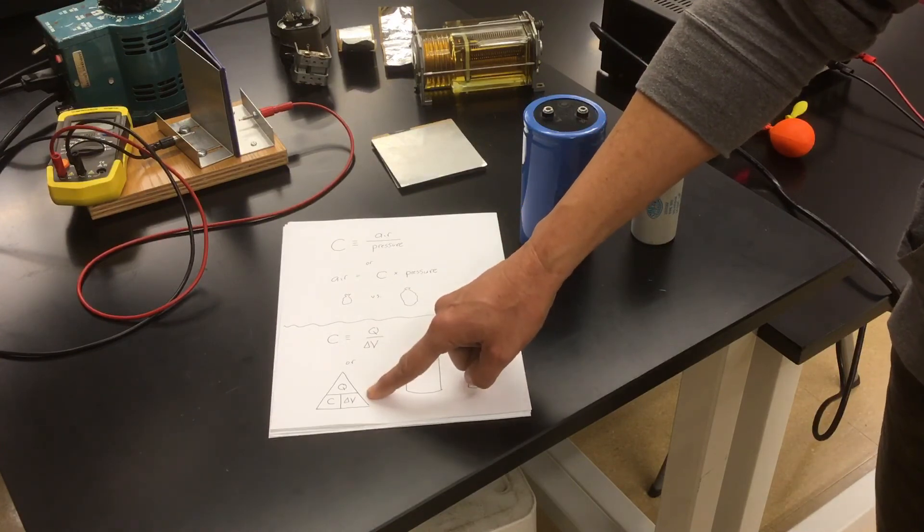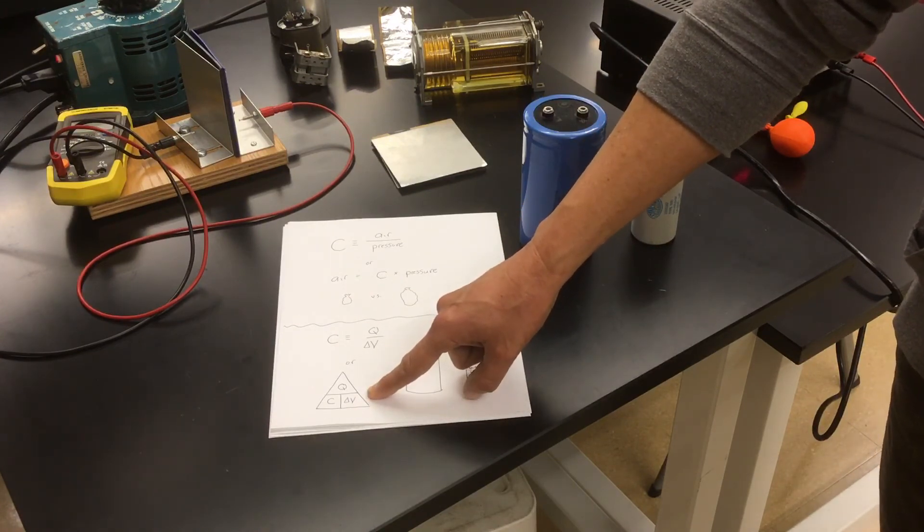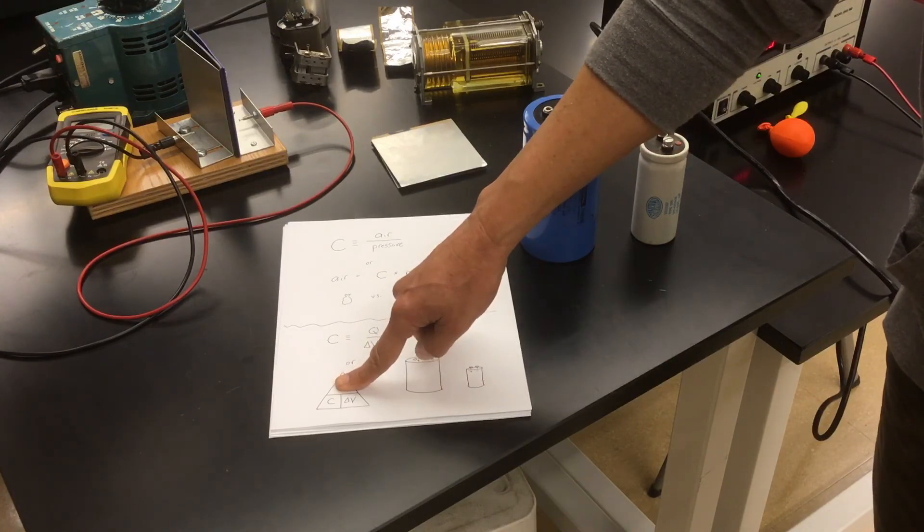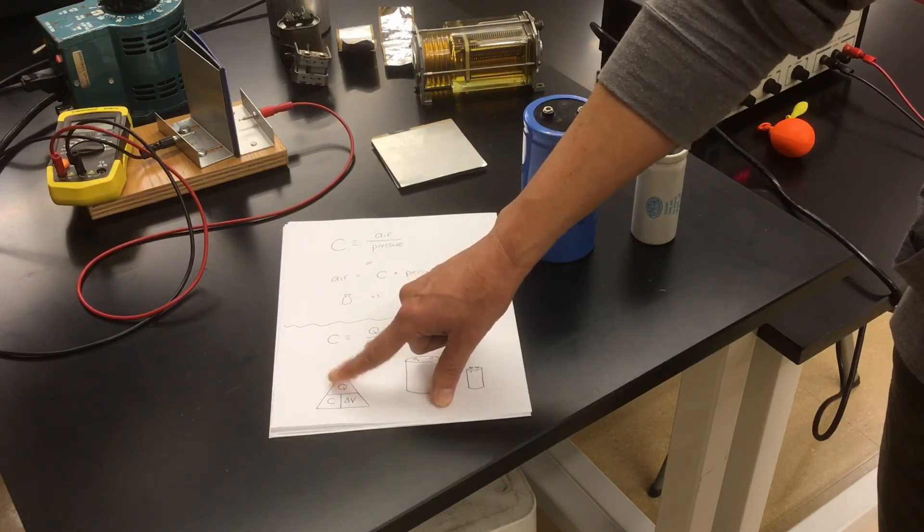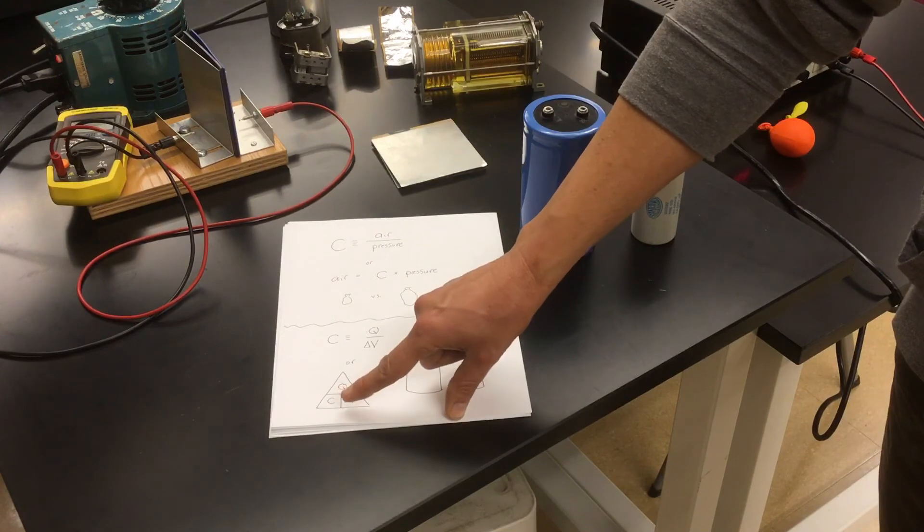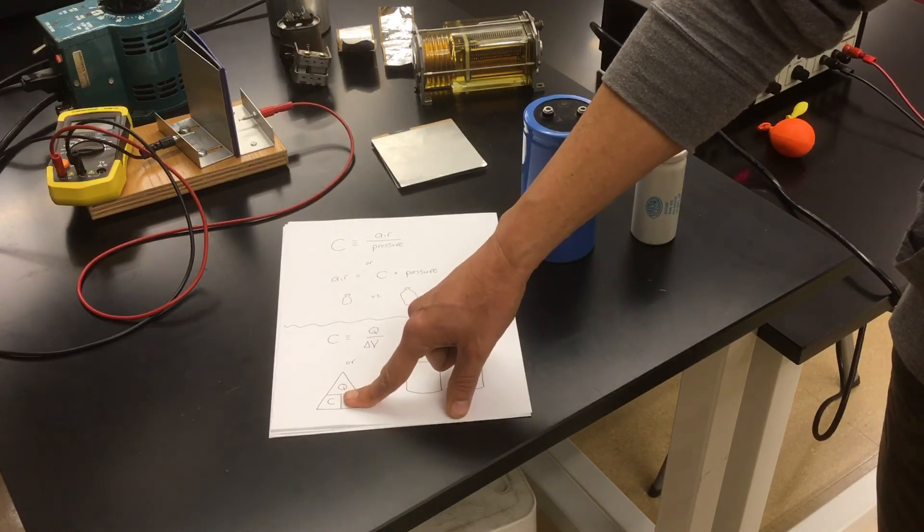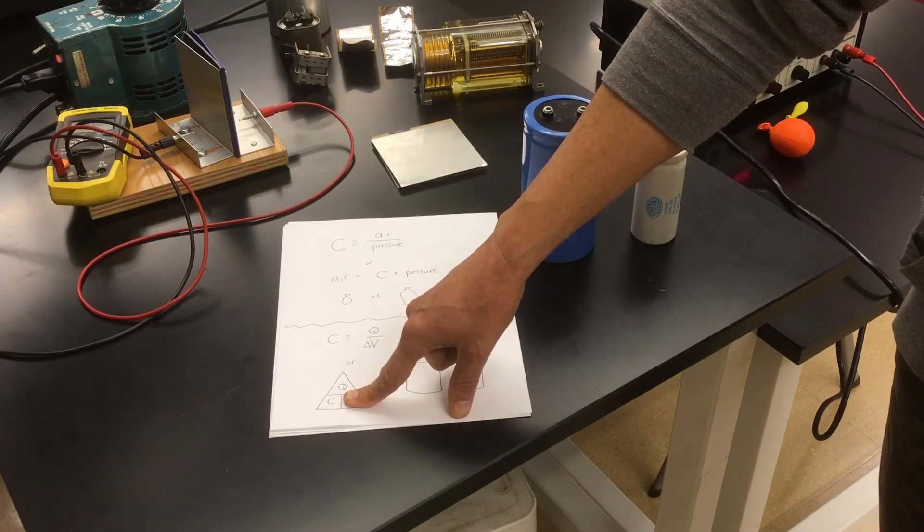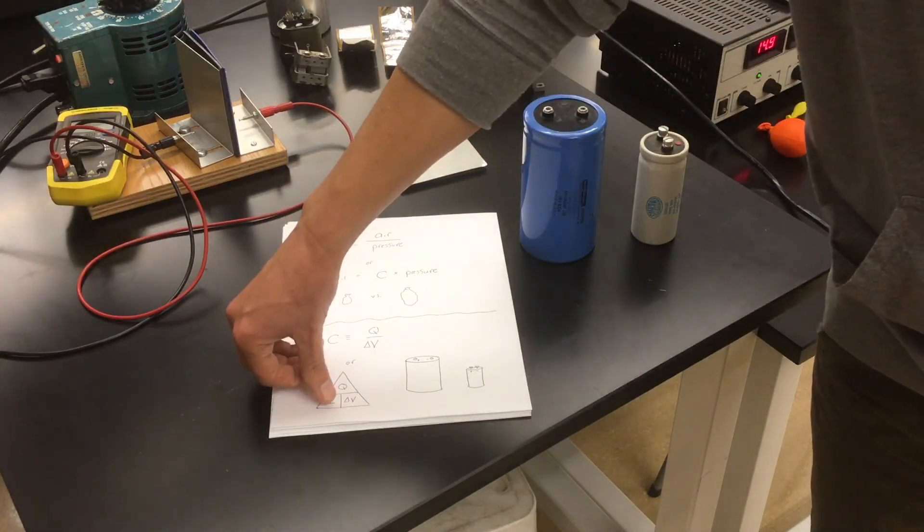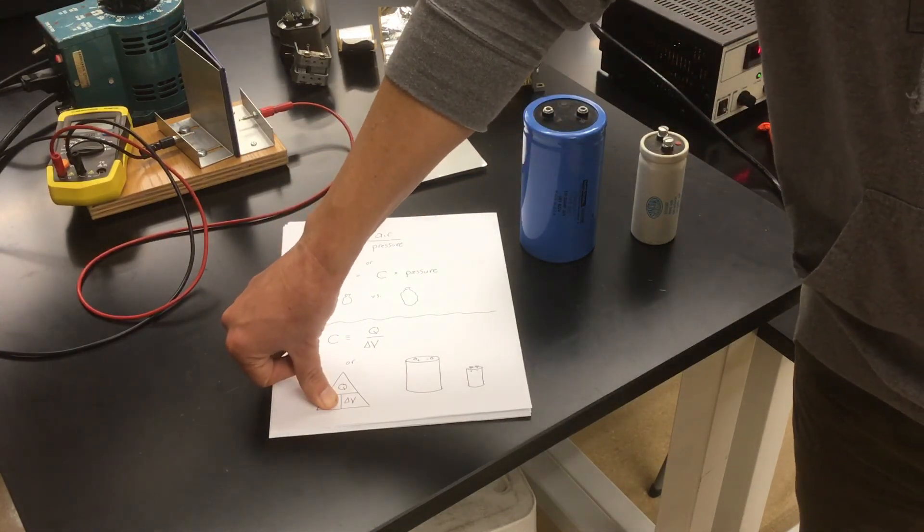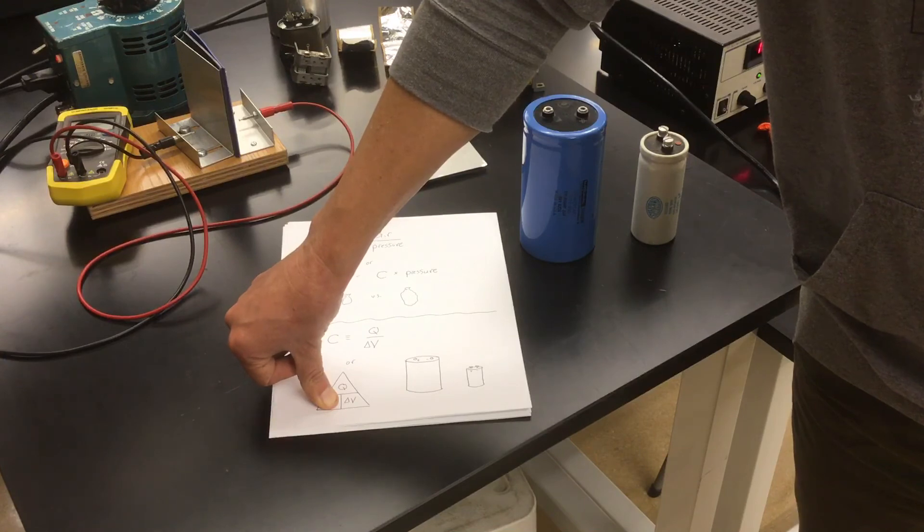It's convenient to write the equation in this form. So if we want to find out how much charge is stored, we multiply the capacitance times the voltage. If we want to know how much voltage was used to charge the capacitor, we divide the resulting charge by the capacitance. And if we want to determine what is the capacitance, we divide how much charge is stored in comparison to what voltage was applied.